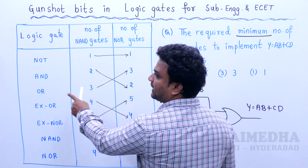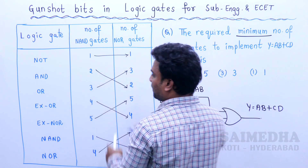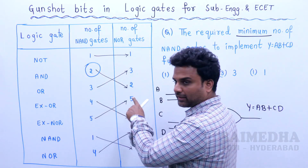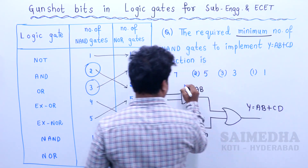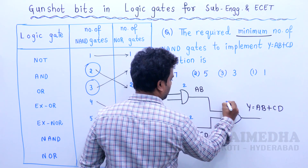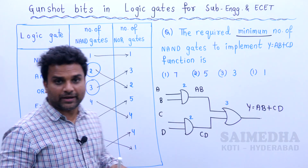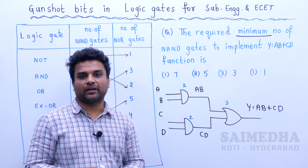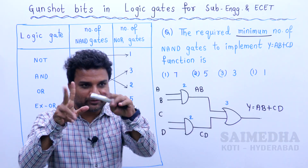We have to implement AND gate using NAND gates — that requires 2 NAND gates. For OR gate, that is 3 NAND gates. So total: 2 plus 2 plus 3 equals 7. The answer is 7.